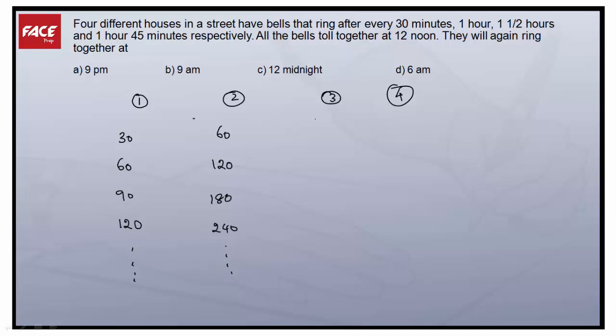What about the third bell? The third bell rings every 1.5 hours which means 90 minutes. The next time it is 180, then 270, 360 and it goes on. The fourth bell rings every 1 hour 45 minutes, which is 105 minutes. First time it will ring at 105 minutes, next 210, next 315, next 420 and it goes on.